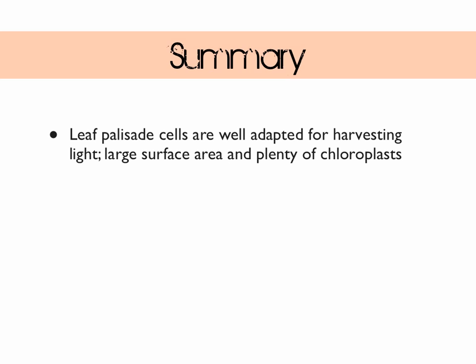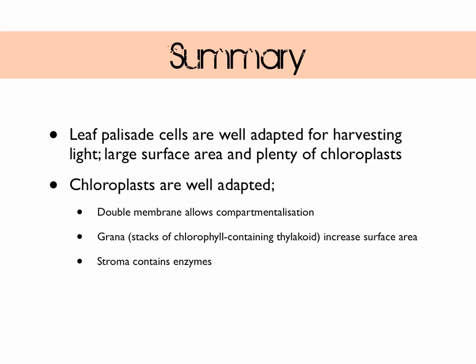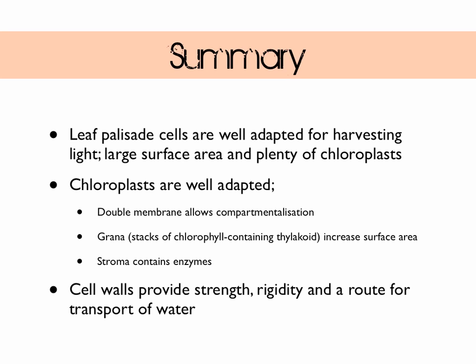Let's summarize. Leaf palisade cells are well adapted for harvesting light — they have a large surface area and contain plenty of chloroplasts. Chloroplasts are well adapted: they have a large double membrane to allow compartmentalization of reactions, stacks of chlorophyll-containing thylakoids known as grana to increase the surface area, and stroma which contains enzymes. Cell walls provide strength, rigidity, and a route for transport of water.